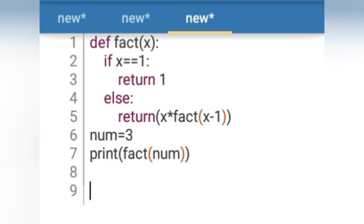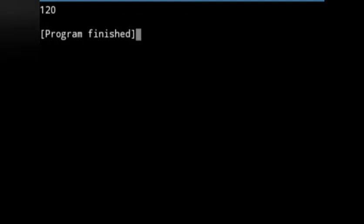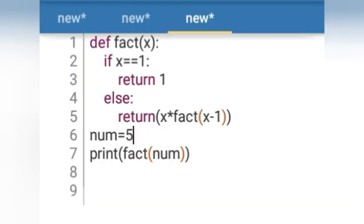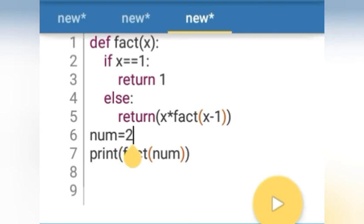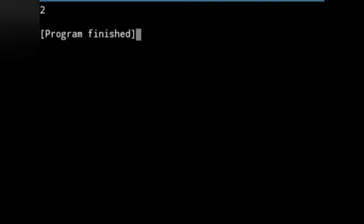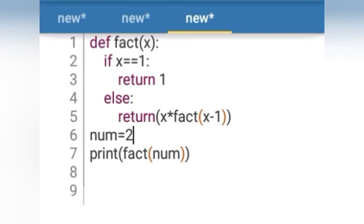You can change the number. Here I have 5 and see, we will get 120. It means that the factorial of 5 is 120. Same thing, we will write another number, we will write 4.